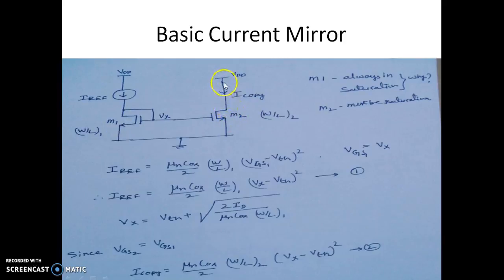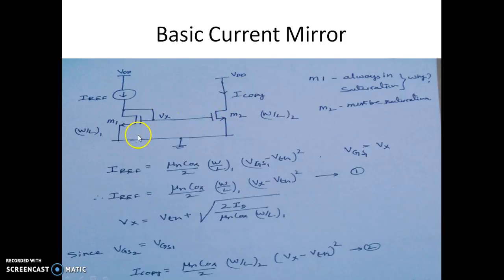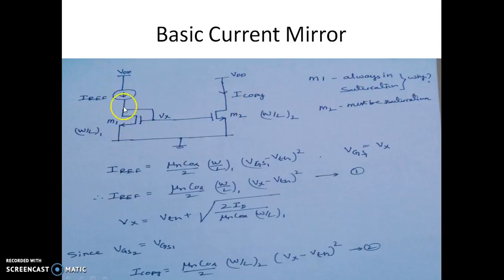We also have M2, whose drain is connected to VDD. This VDD should be such that M2 is always in the saturation region. One thing to observe here is that M1 is always in saturation. The reason the drain and gate of M1 are shorted is so that the required amount of current copy happens on the M2 side. M2 is also connected to VDD.